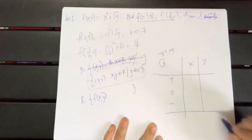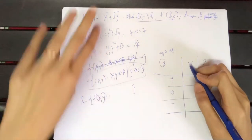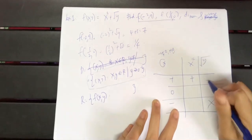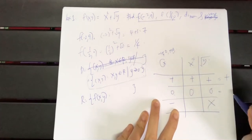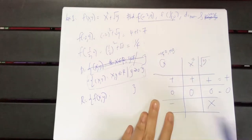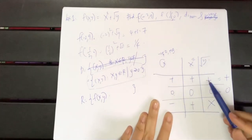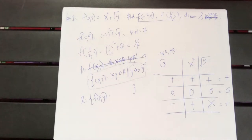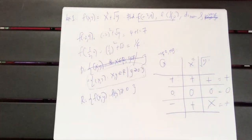When you substitute negative into x, you get positive because of x². And for y, you cannot substitute negative — only zero or positive. So the answer is always zero or positive. Therefore, the range is f(x, y) ≥ 0.